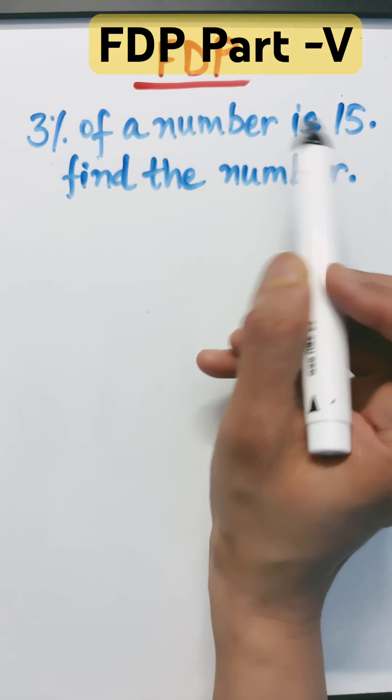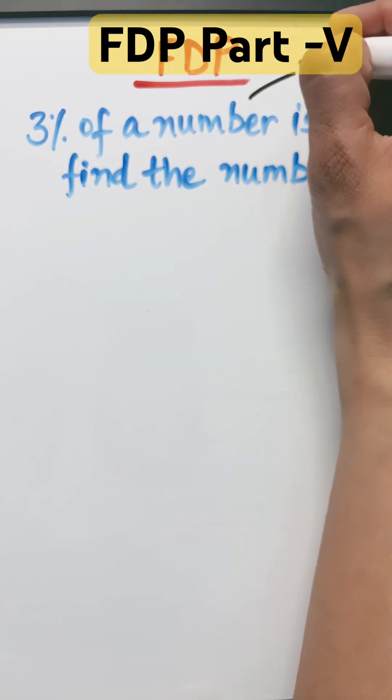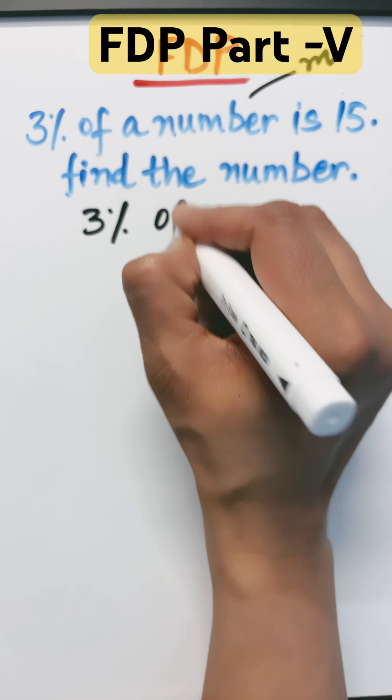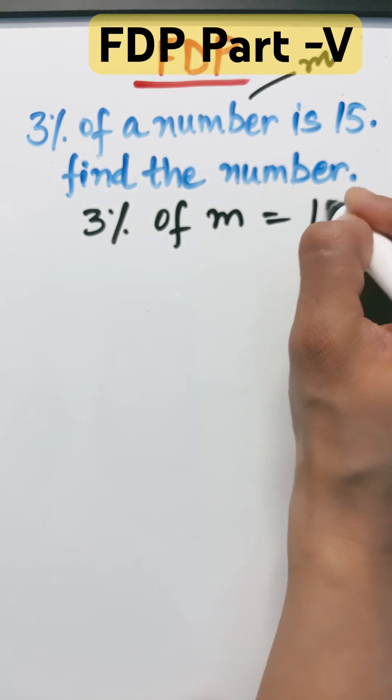So 3% of a number is 15. Find the number. Let the number be m. So 3% of m is equal to 15.